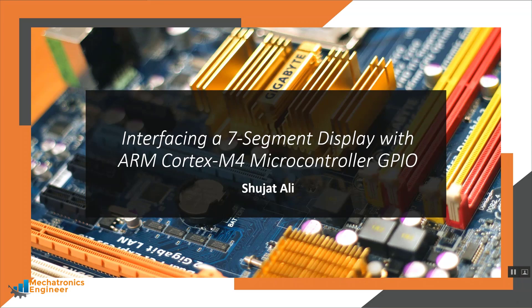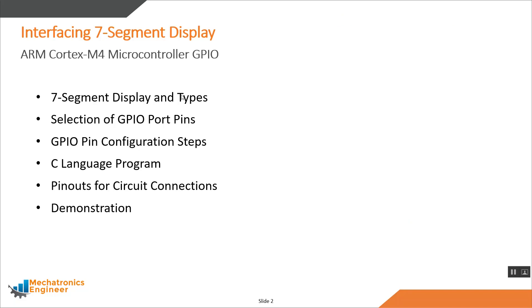In this video we are going to discuss the interfacing of a seven segment display with ARM Cortex-M4 microcontroller available on the TIVA C-Series LaunchPad. These are the steps we will follow: first, discuss the seven segment display and its types; then GPIO port selection; then GPIO pin configuration; then write a C language program in uVision Keil; then discuss pinouts for circuit connections; and finally see a demonstration.